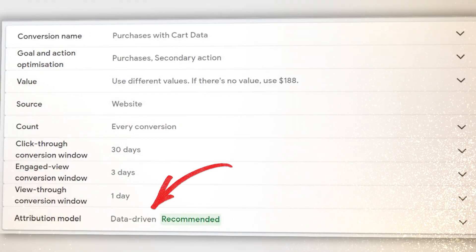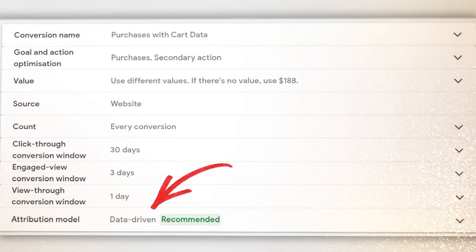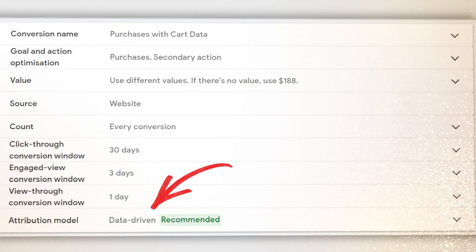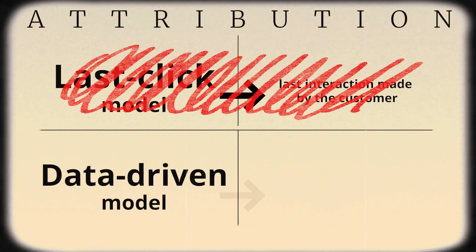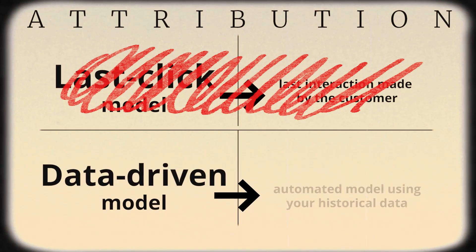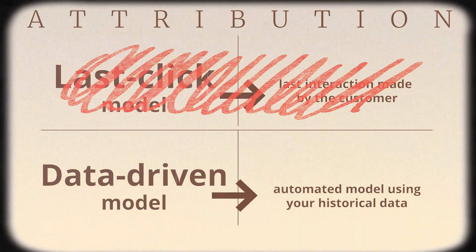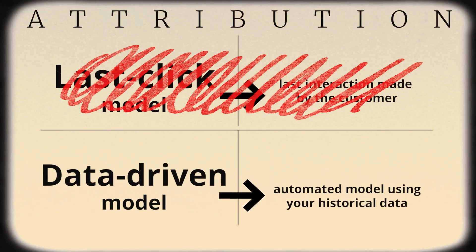Make sure your conversion tracking uses the data-driven model. This is an automated attribution method where Google uses your historical data to build your own attribution model. By using this, different keywords, ads, and assets will get more attribution.